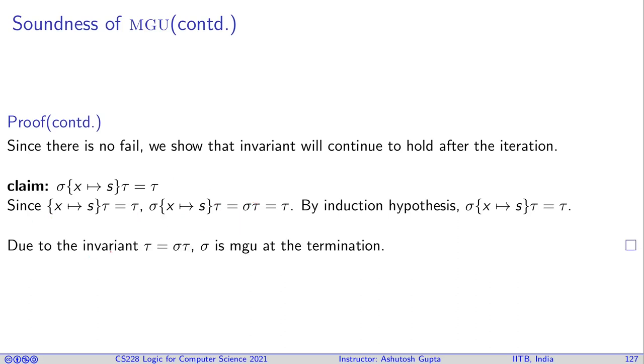Since we have established that this fact is invariant, therefore upon termination sigma will also be a unifier of t and u, and it will also be a more general unifier than any other unifier. Therefore it must be an MGU and the proof is complete.